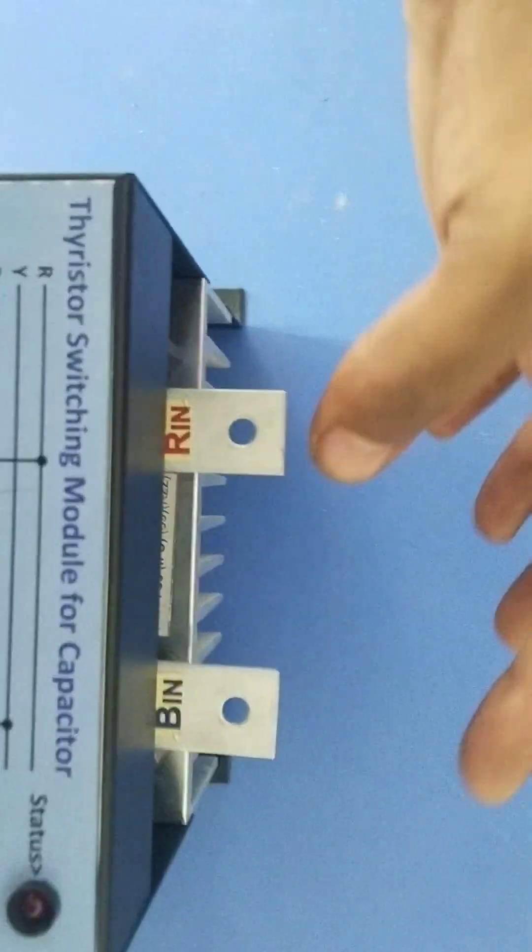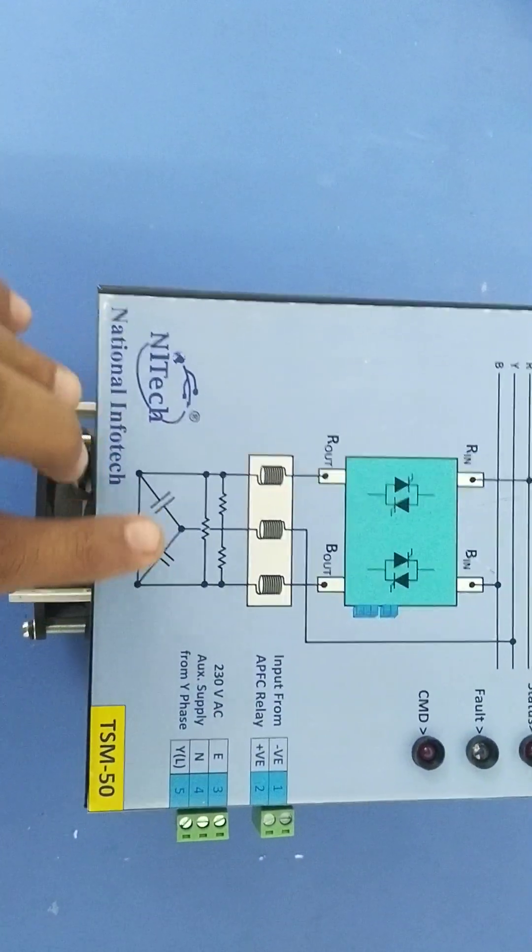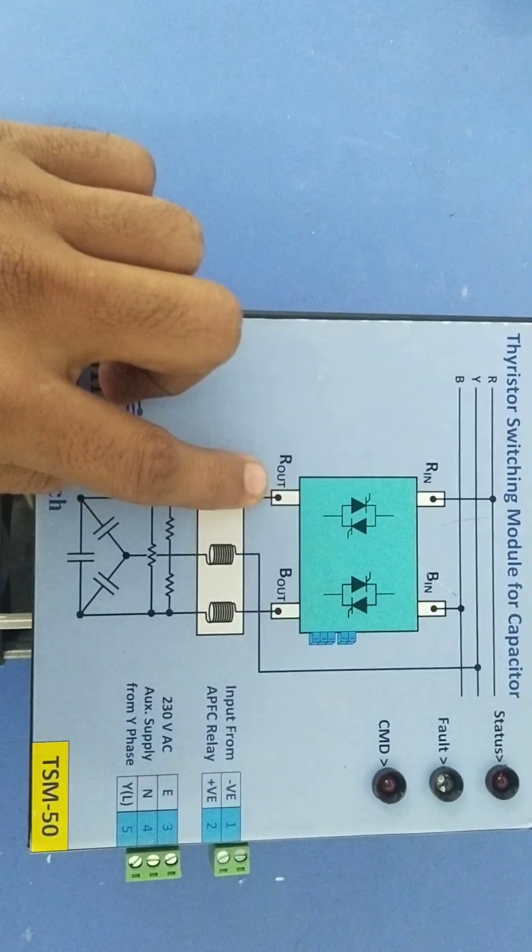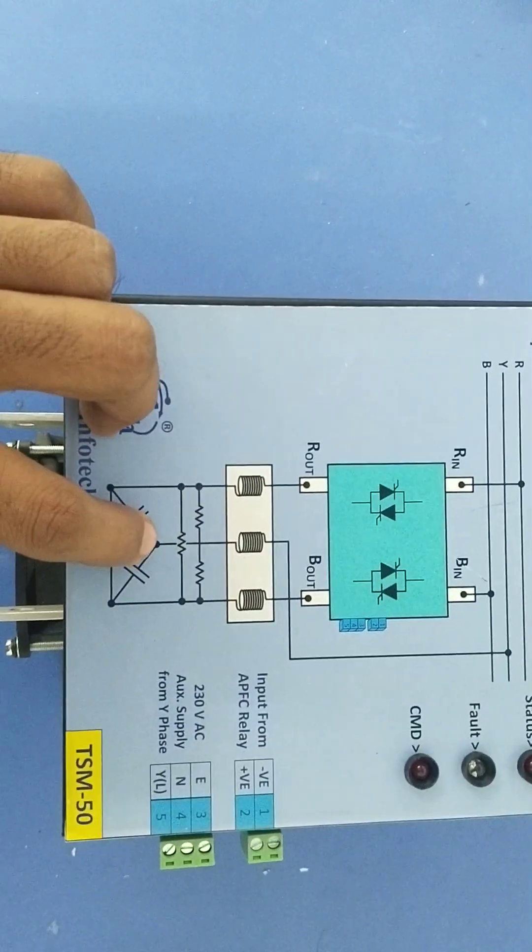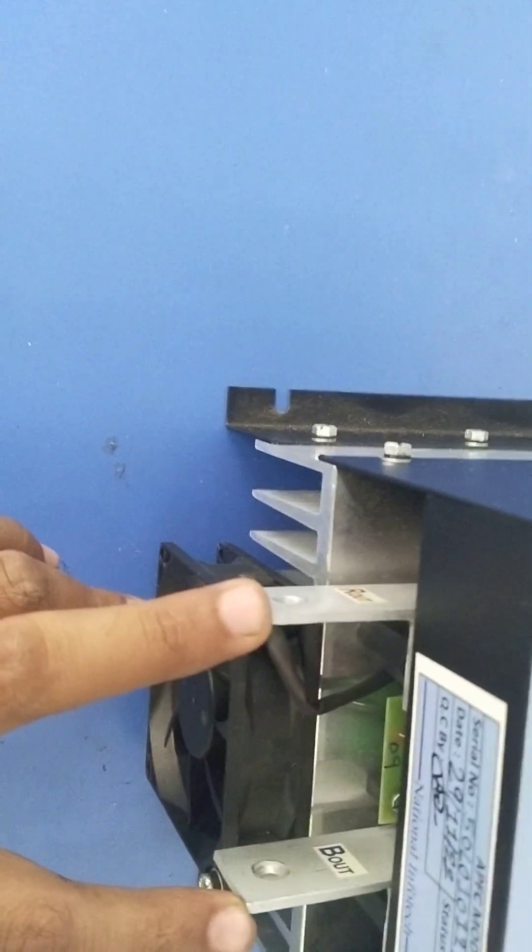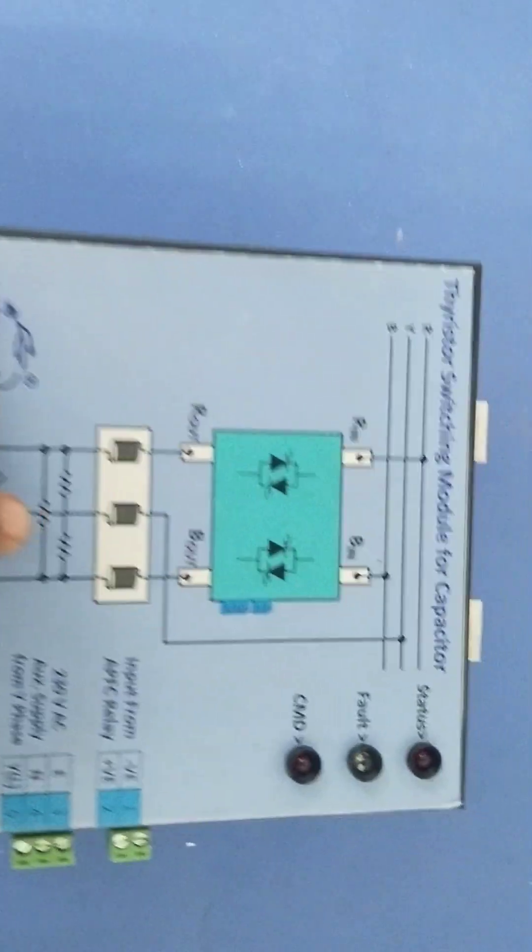B connection should be connected with this R in and B in terminals. Then from your capacitor bank, one phase with R out, another phase with B out should be connected here at R out and B out. And the remaining terminal, that is the Y terminal, should be connected directly with the mains.